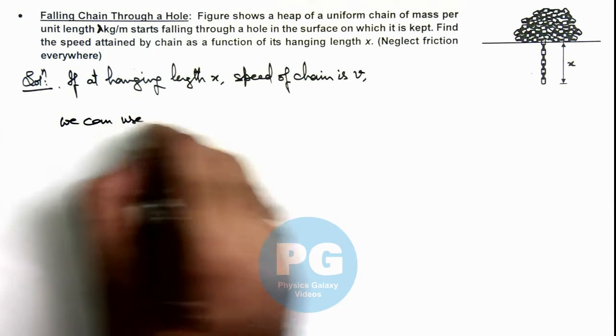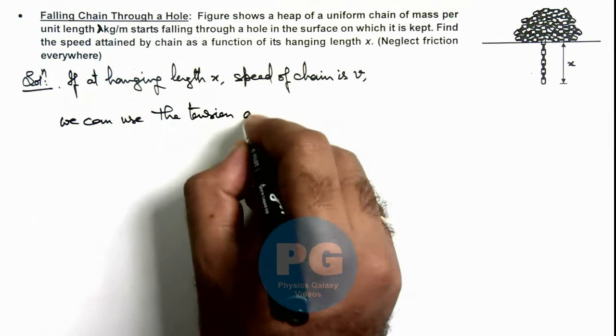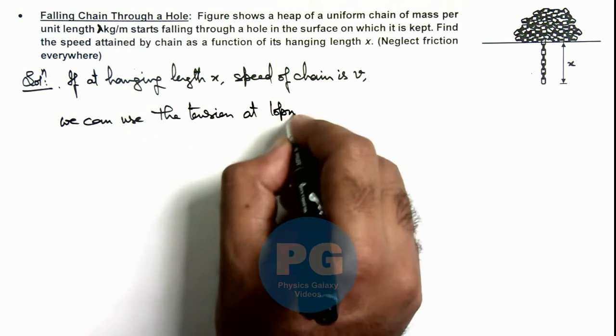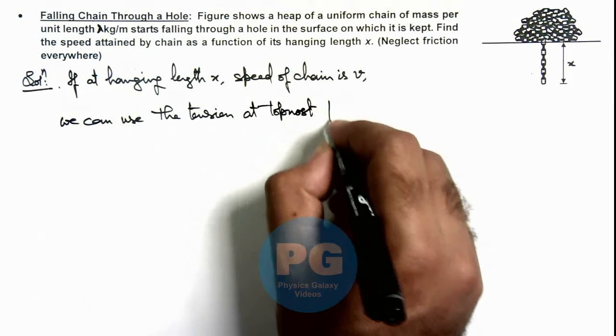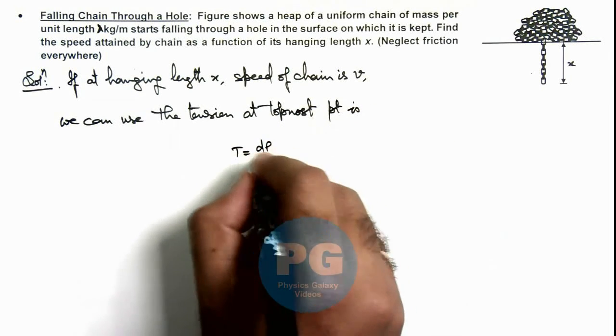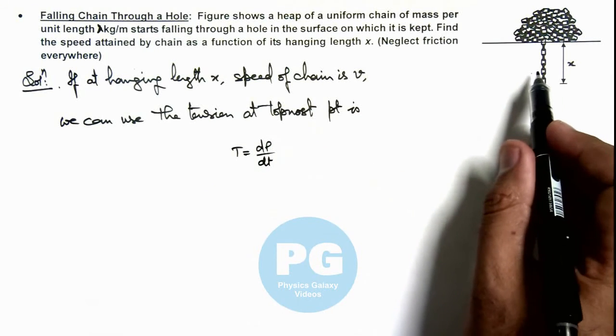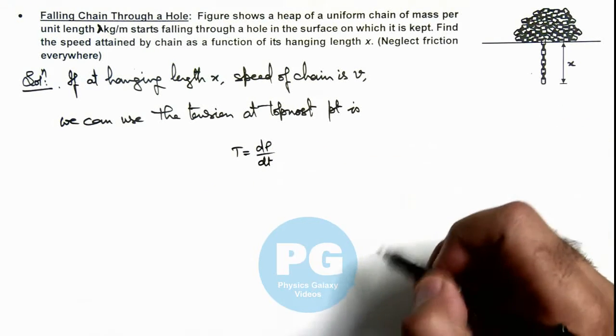We can use the tension at the topmost point: T equals dp/dt, where dp is the momentum gain by the chain in time dt.